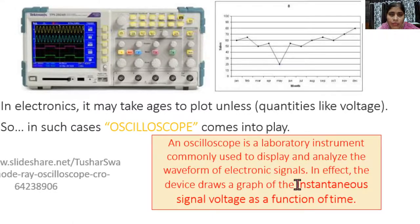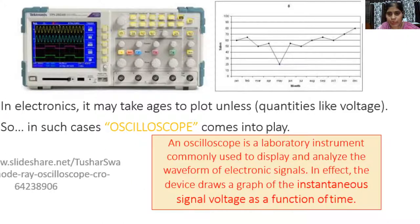Most of the time we display the graph for voltage with respect to time. The oscilloscope is used to display and analyze the waveform, and it can be used to measure the amplitude of the signal, the frequency of the signal, and the phase angle of two signals if they are provided to the CRO.